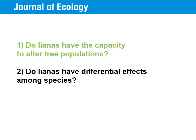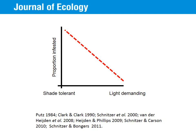These results indicate that lianas indeed have the capacity to alter tree populations. However, do the effects differ among species? A large number of studies have shown that shade-tolerant tree species — those that can survive in deep shade — tend to have much larger proportions of individuals infested by lianas. Light-demanding species, on the other hand, typically seldom carry lianas in their crowns. This observation has led to the general expectation that especially shade-tolerant tree species should suffer more from liana infestation, as they have large portions of their population infested.